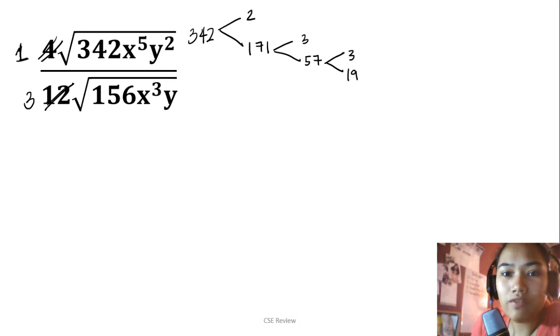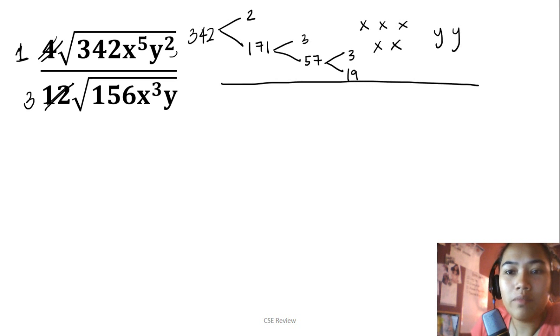For the x, you have 5 x's: 1, 2, 3, 4, 5. And then 2 y's, because that's the exponent. So y, y. That's what's on top.